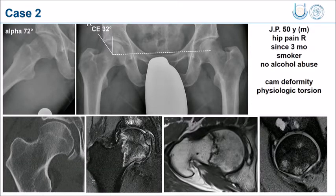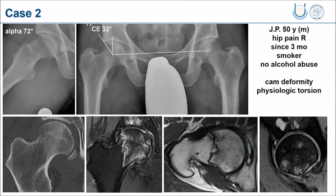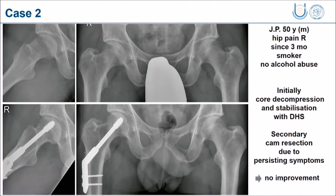The next case is a 50-year-old male with pretty normal acetabular coverage and an alpha angle of 72 degrees. You can see the necrosis with the stress fracture and an increased alpha angle. He smokes about five cigarettes per day but no alcohol. We performed a hip screw, and as he persisted with problems we added a cam resection in a second procedure half a year afterwards. But again, this case showed no improvement at all.